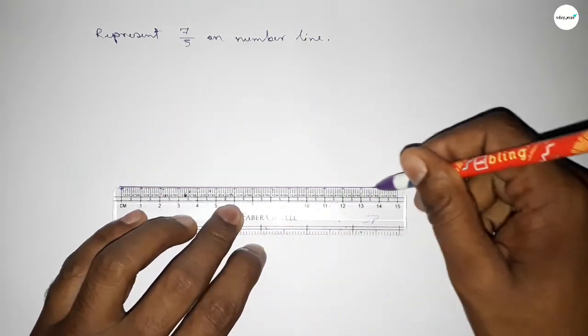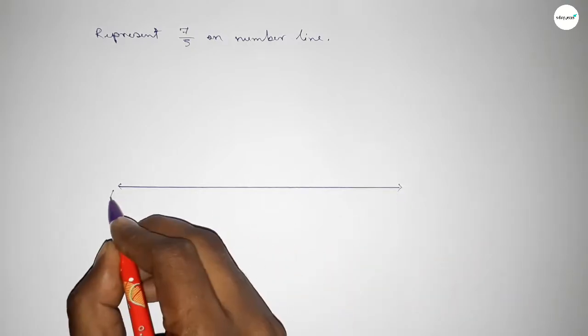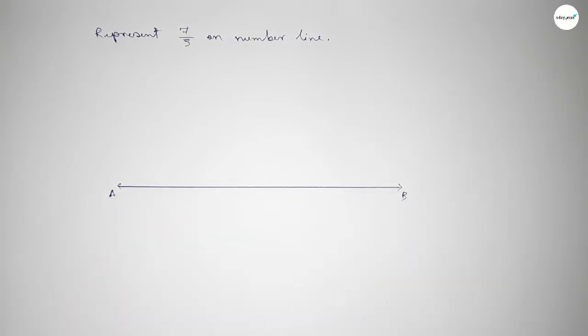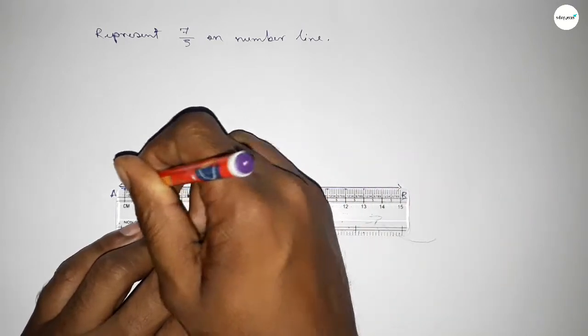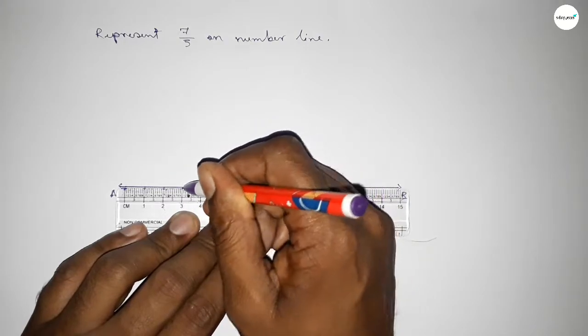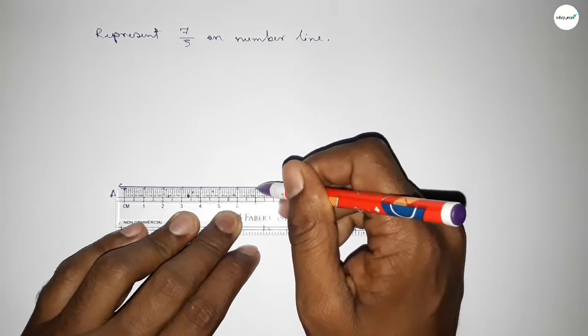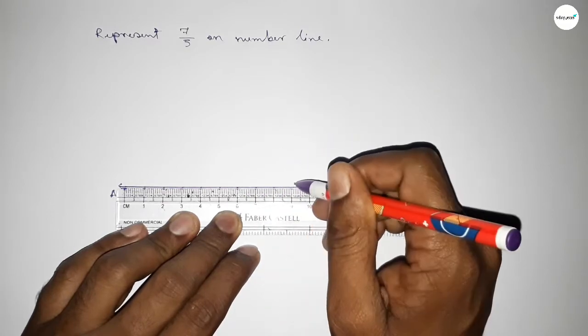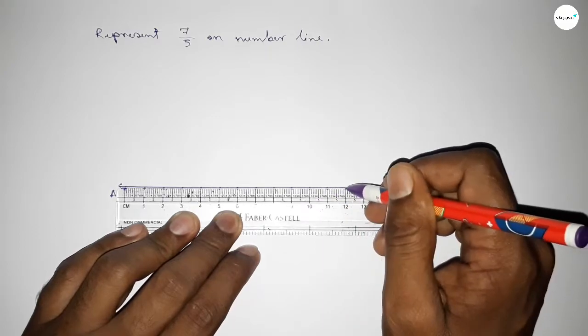First of all, we have to draw here the number line. So first drawing here a line of any length and mark the ends with arrows. Next we have to mark the numbers on the line by using scale. So by this way we can draw the number line.